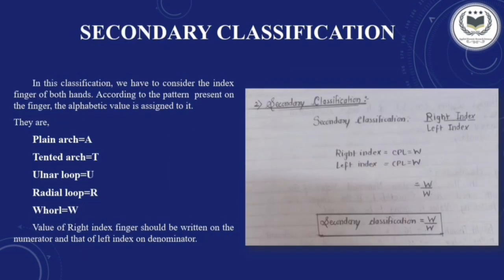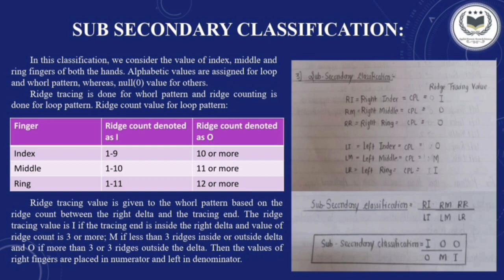The next major classification is secondary classification. Here we consider only the index finger of both hands — right index and left index — placed as numerator upon denominator respectively. We check the patterns: plain arch is denoted by A, tented arch by T, ulnar loop by U, radial loop by R, and whorl pattern by W. For example, if right index has a central pocket loop (a whorl pattern) and left index also has a central pocket loop, the secondary classification value is W/W.